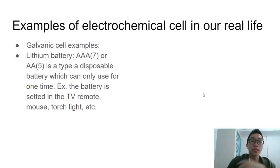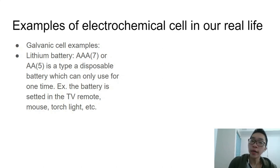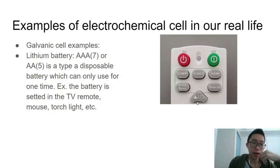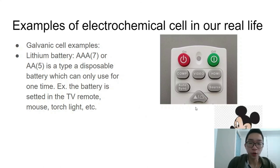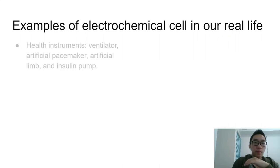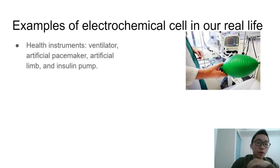Another example is the galvanic cell, related to disposable batteries such as lithium batteries — also called triple-A or double-A batteries, or in China called 'seven' or 'M5.' These are disposable batteries that can only be used one time. They are found in TV remotes, computer mice, and torches.